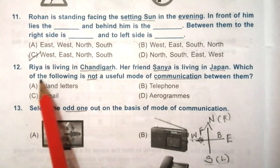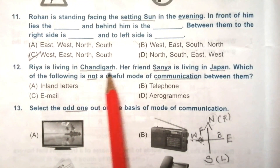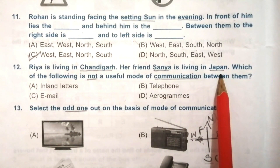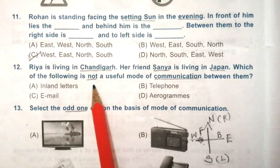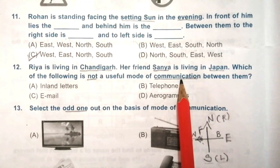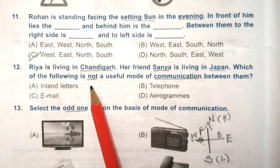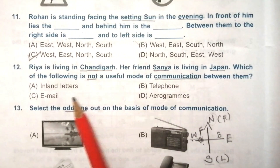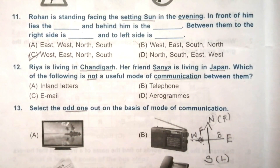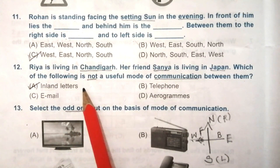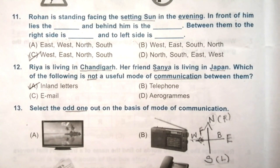Question 12: Rhea is living in Chandigarh and her friend Sanya is living in Japan. Which of the following is not a useful mode of communication between them? Options are: inland letters, telephone, email, aerograms. The answer is A — inland letters, because inland letters are used to communicate inside a country only.